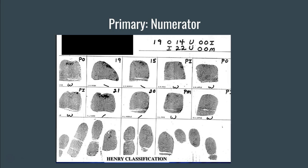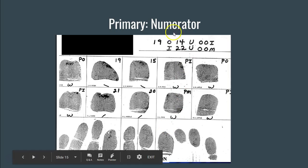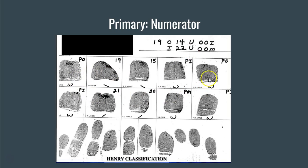Looking at the Henry classification in the top right-hand corner of the fingerprint card, to do a Henry we need a fingerprint card that has been fully classified — each finger classified as an arch, a loop, or a whorl. We then look at which fingerprints are whorls. For example, not all fingerprints are whorls: finger 1 is a whorl, finger 2 is an ulnar loop, finger 3 is an ulnar loop, finger 4 is a whorl, and finger 5 is also a whorl. To figure out the primary — the numerator on top and denominator on the bottom — we add up the values of the boxes that have whorls.